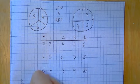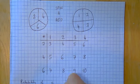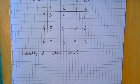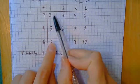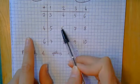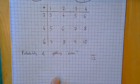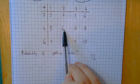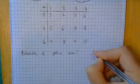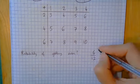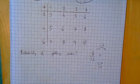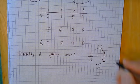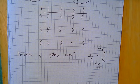What could they ask? What's the probability of getting an even number? How many options are there altogether? Counting the table: twelve. How many even numbers? One, two, three, four, five, six — so six even results. That gives six twelfths. Dividing top and bottom by six gives one half.